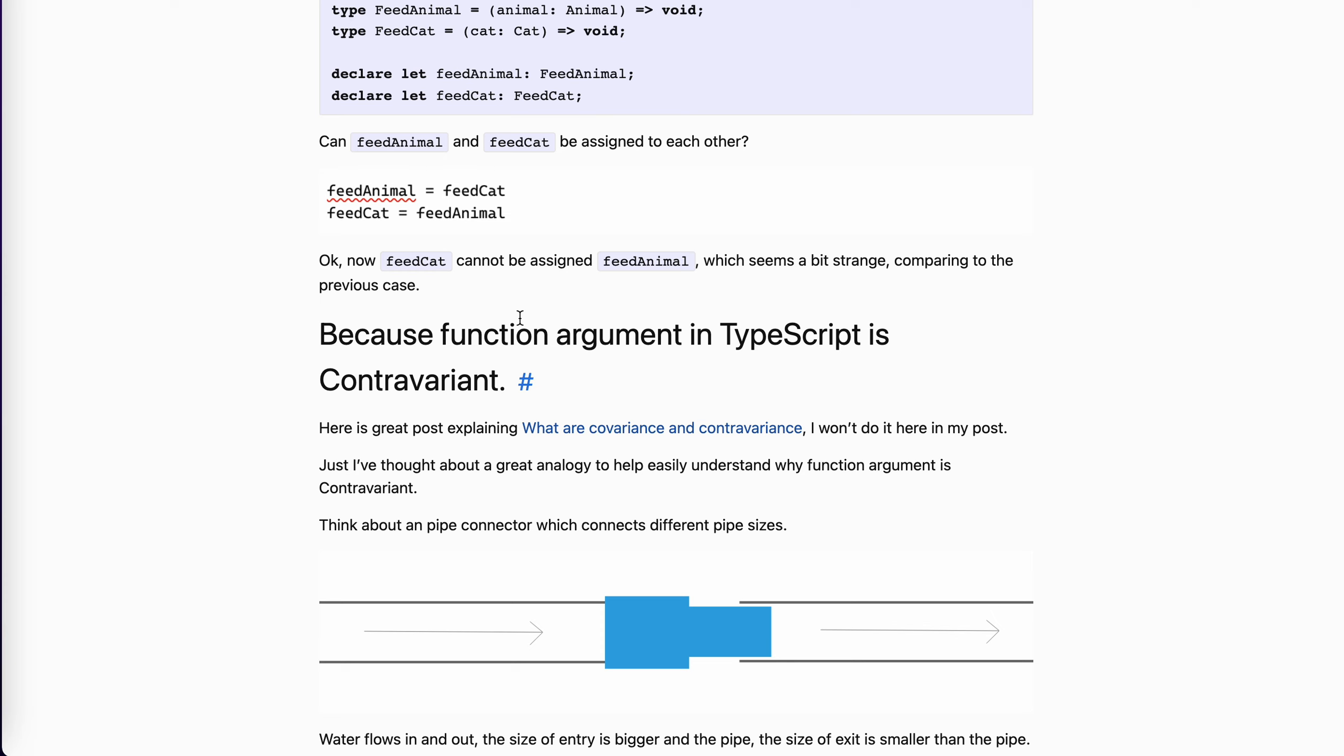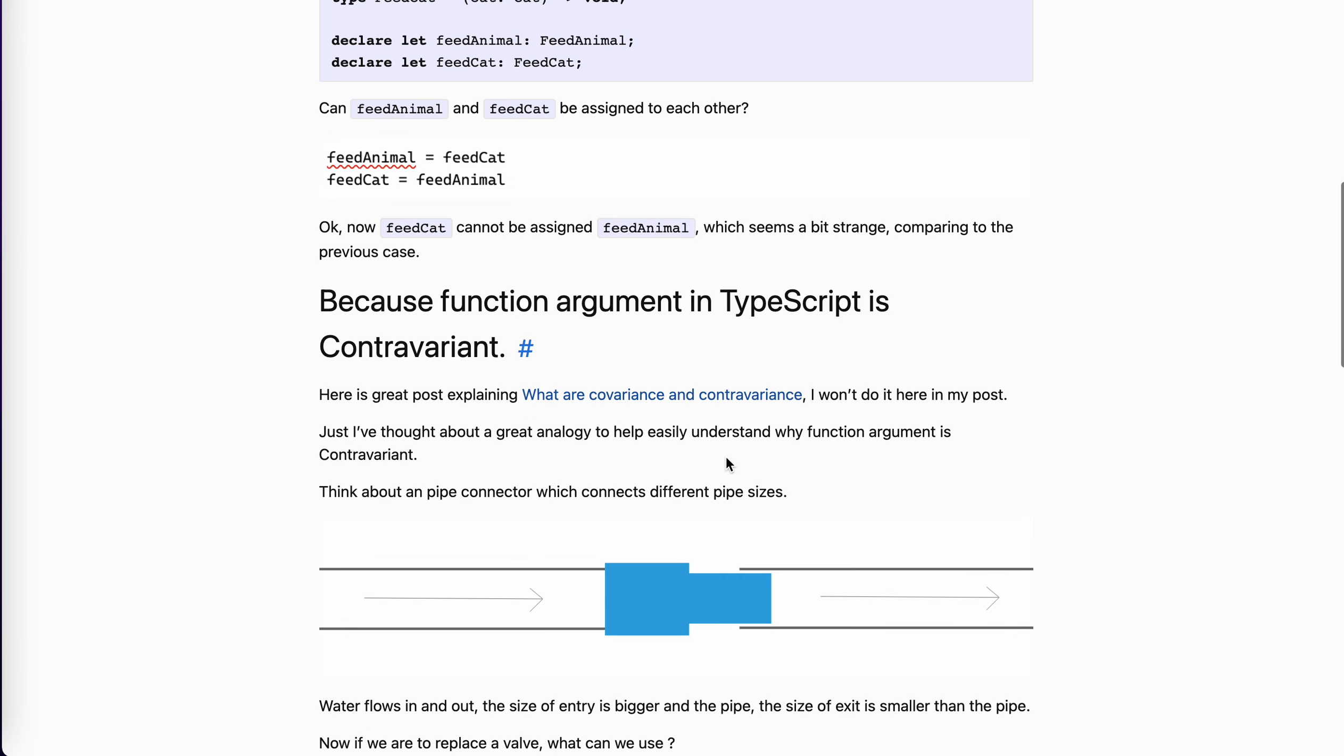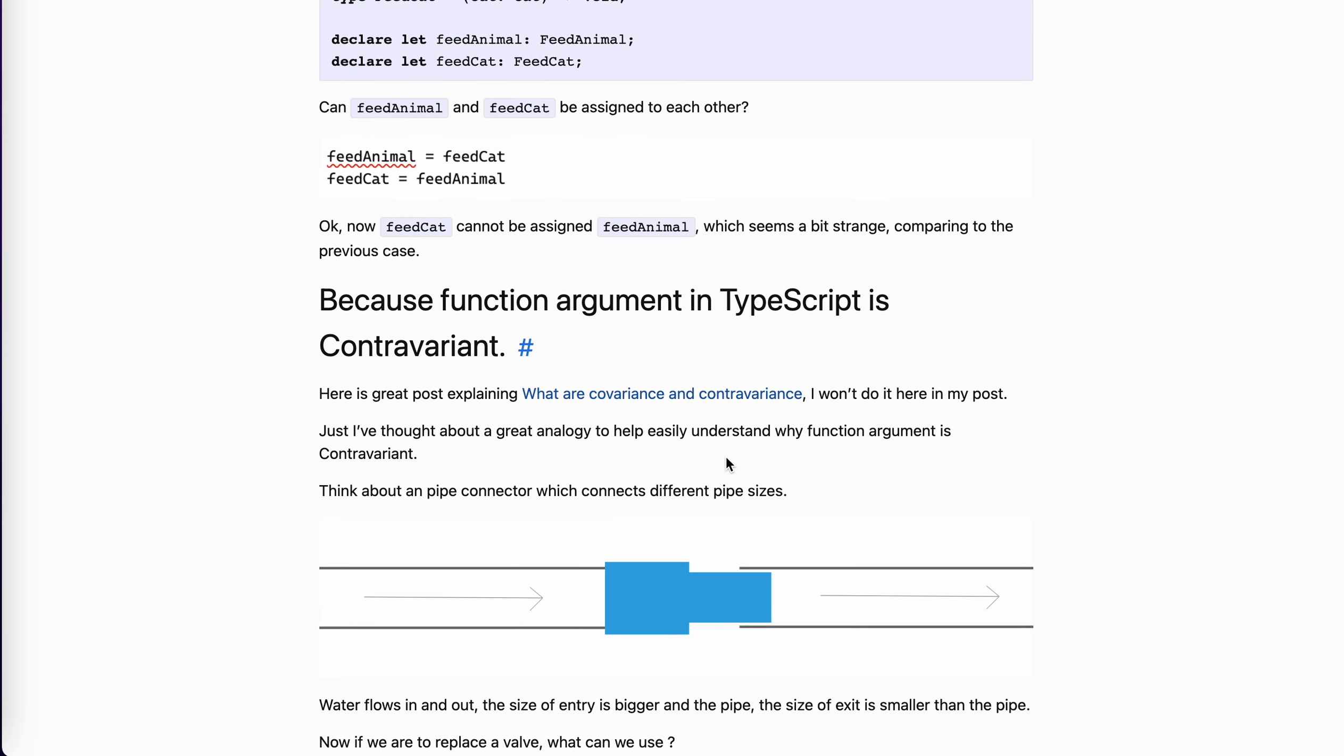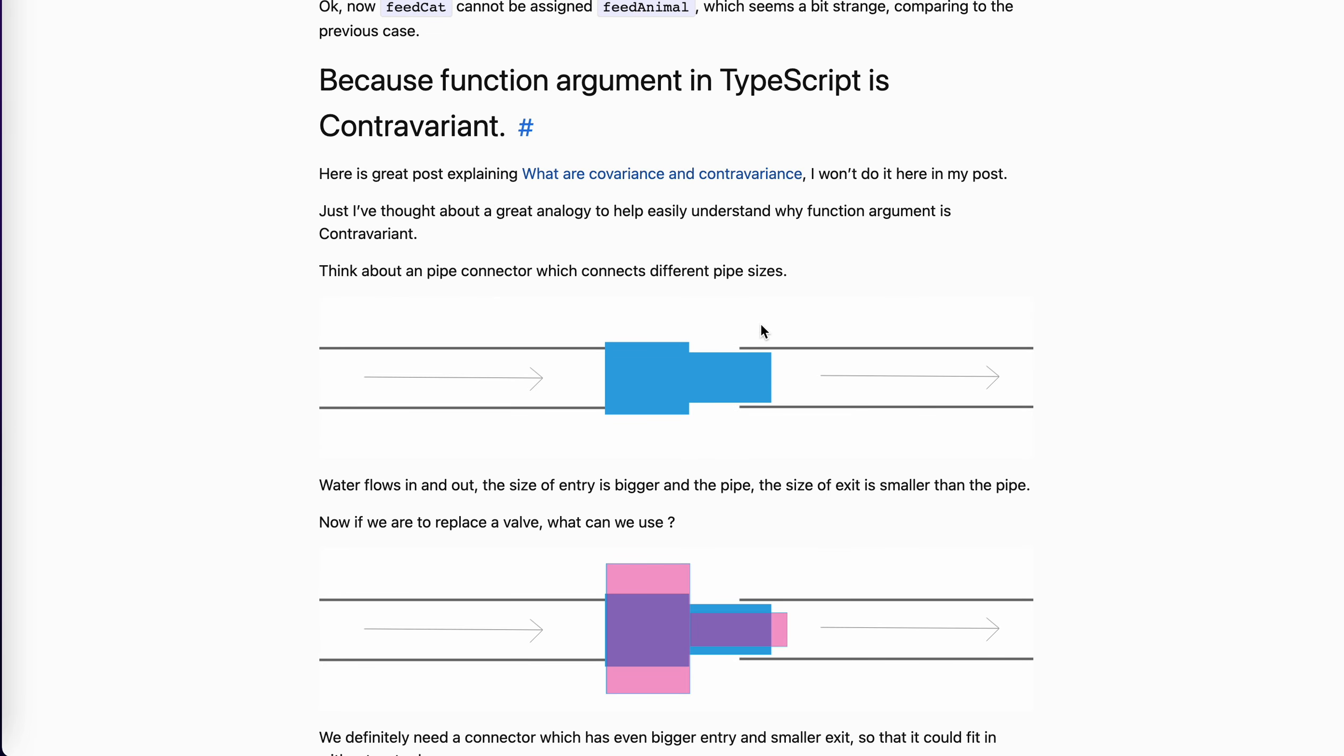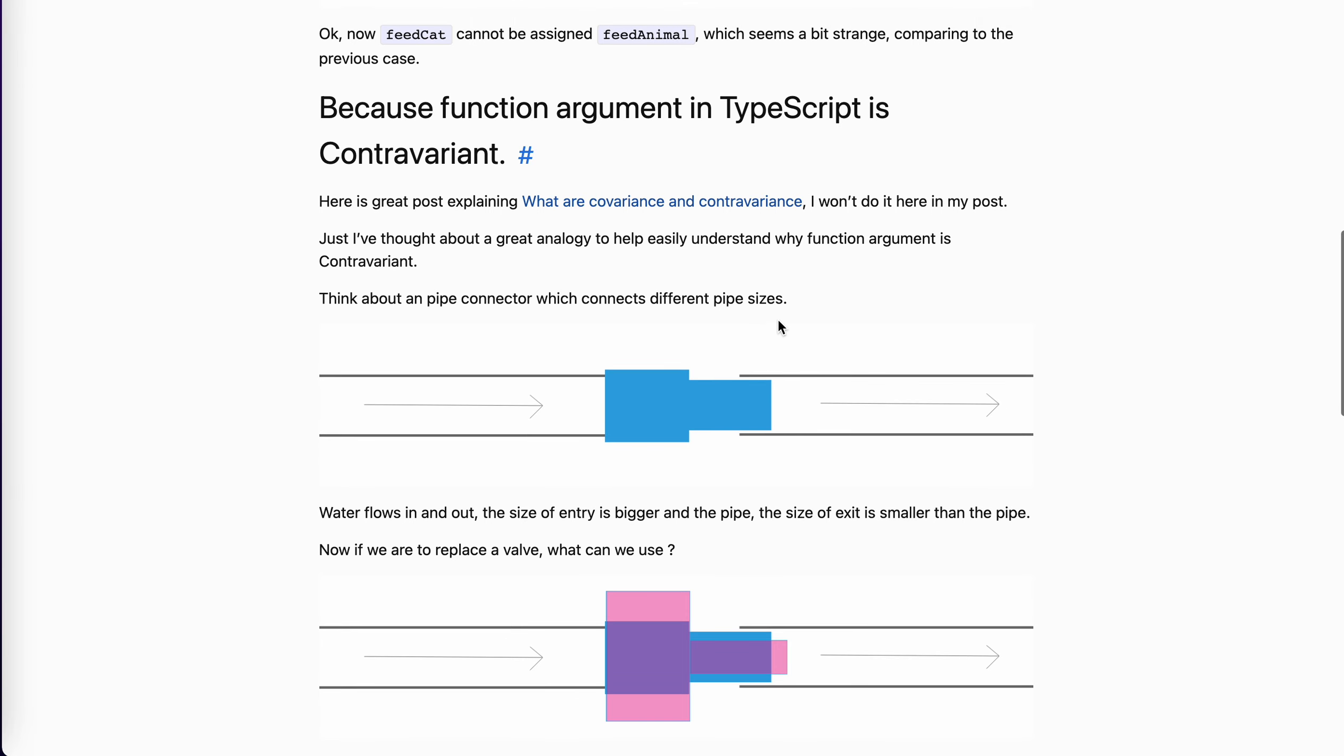The reason why, what is covariance and the contravariance? I've already put a link about this. I saw this post from other guys' blogs. It's very clear and I suggest you take a look. So I'm here just to tell you about this analogy I thought of to understand it.